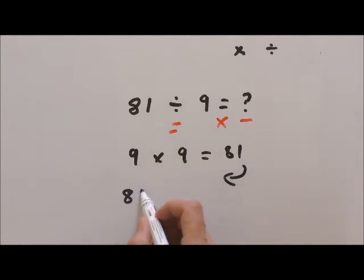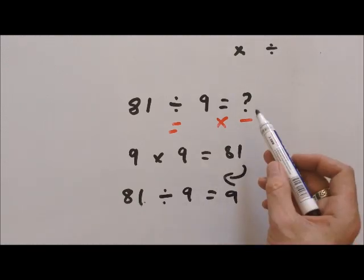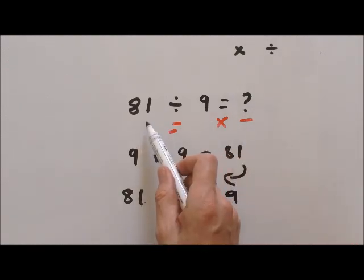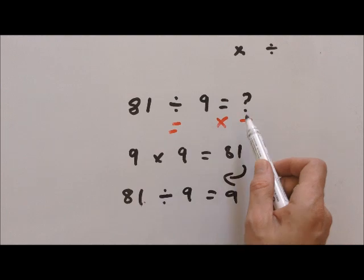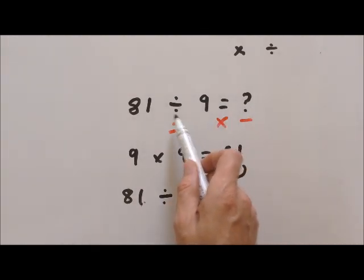So 81 divided by nine equals nine. Whenever I see a division problem like this, I think something times nine equals 81.